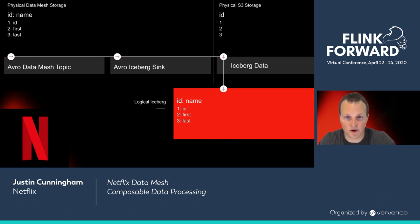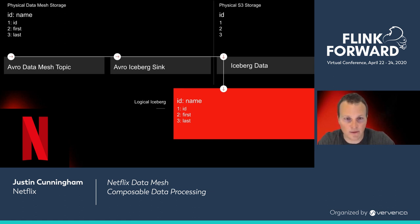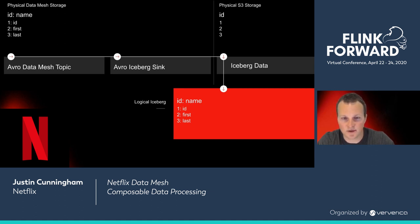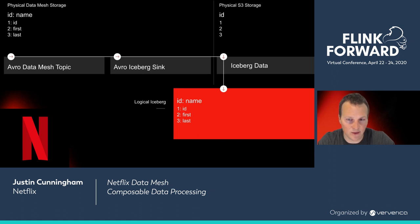I'm going to run through an example to demonstrate the concept of ID-based mapping. Let's start with a simple person table with three columns: ID, first, and last. In the top left, you have the Avro data mesh topic schema, and in the top right, you have the physical S3 storage that corresponds to that. In the bottom right, you have the logical representation of the S3 data in Iceberg. The thing we're looking to do is add an ID-based mapping layer. Ordinarily, Avro tends to use name-based mapping and our data warehouse data used position-based mapping, which made renames particularly challenging to implement. In ID-based mapping, columns are primarily designated by an ID which can't change, and that ID is mapped to a name which can change.